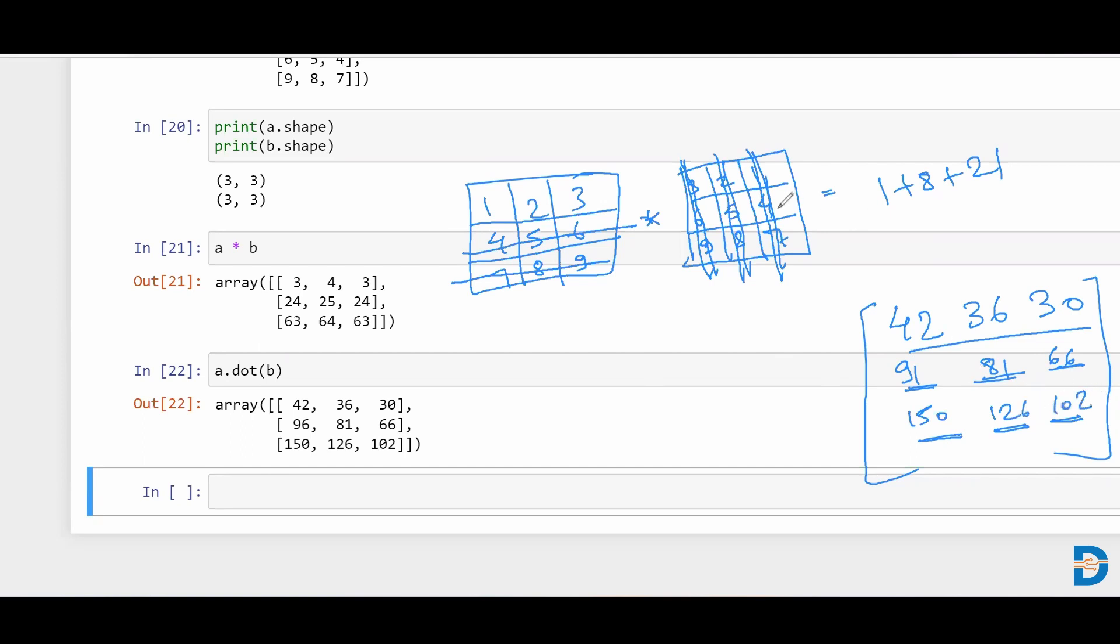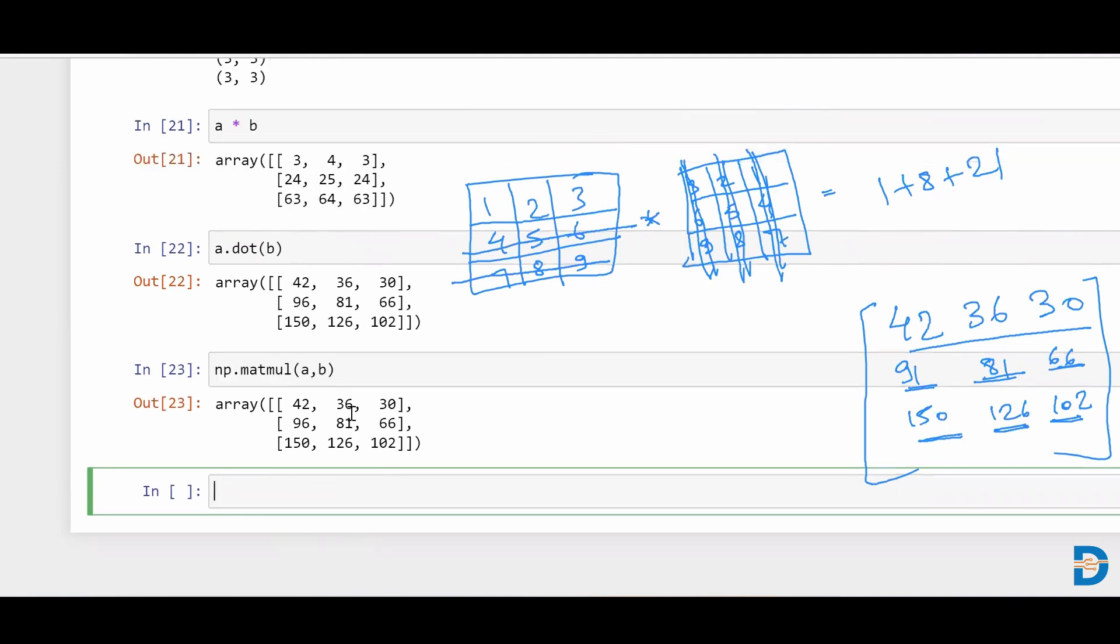This is a way of doing a dot product. And we have a very simple functionality called dot. And more or less, there is one more inbuilt NumPy functionality called as matmul. And simply, you put your A and your B, and you'll see the same dot product multiplication has happened. This is how two matrices are getting multiplied together.